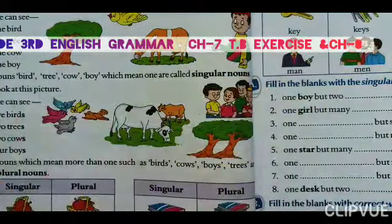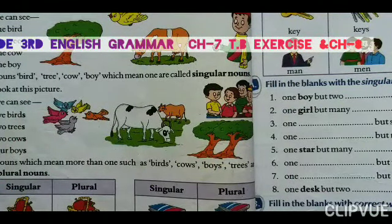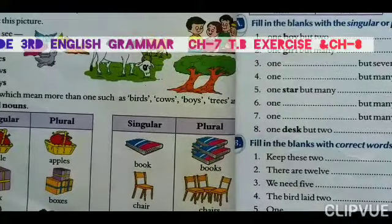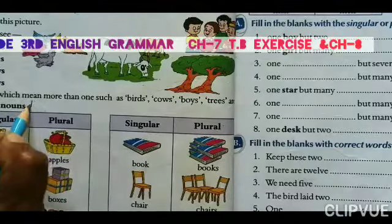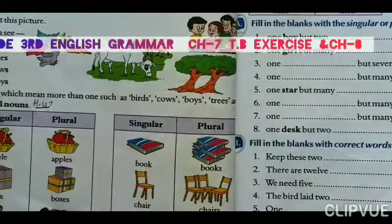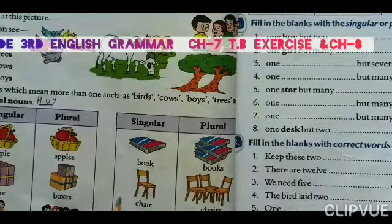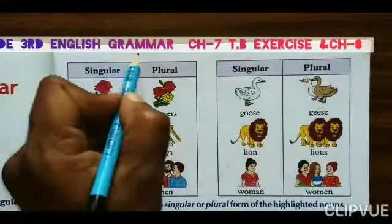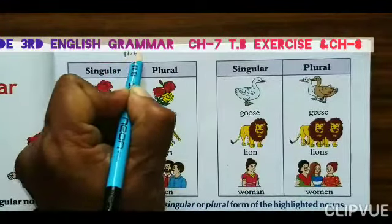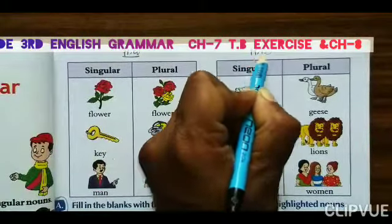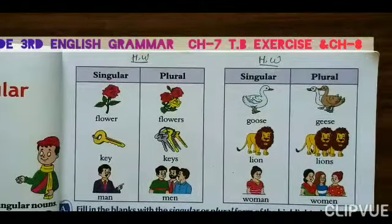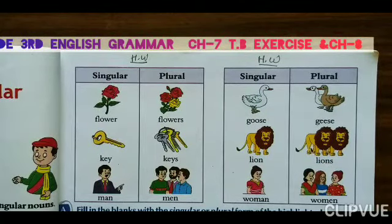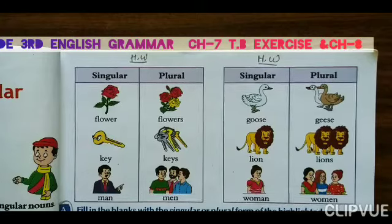Now, students — homework for you. All students will write page 26: the singular and plural table in your notebook with good handwriting. You will write all four boxes in your notebook. Then we will do exercises A, B, and C. Thank you.